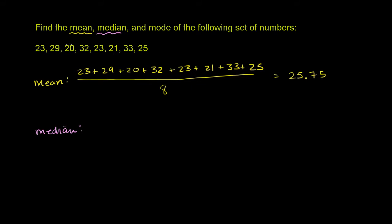So it looks like the smallest number here is 20. Then the next one is 21. Then we go, there's no 22 here. There's two 23s, 23 and a 23. And no 24s, there's a 25. There's no 26, 27, 28, there is a 29. Then you have your 32, and then you have your 33.